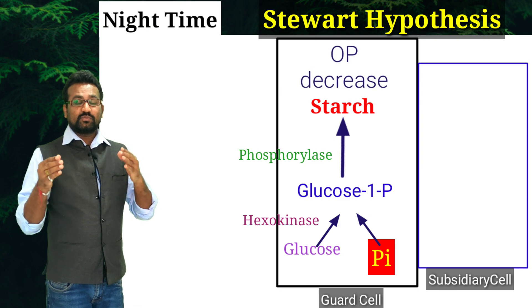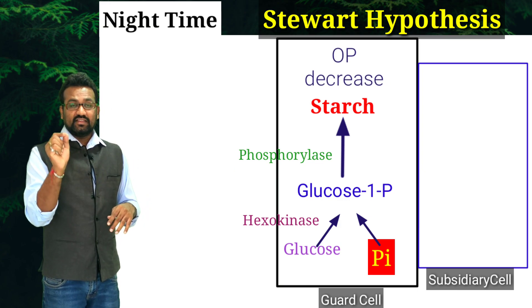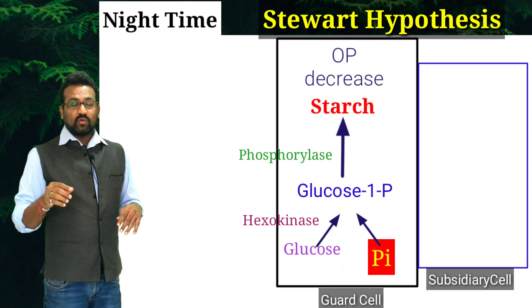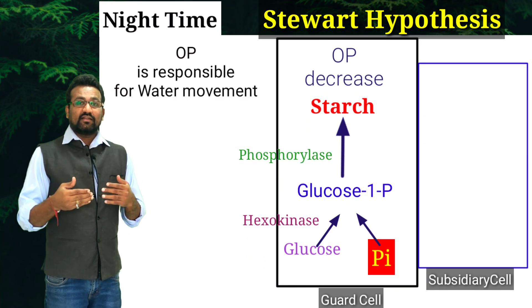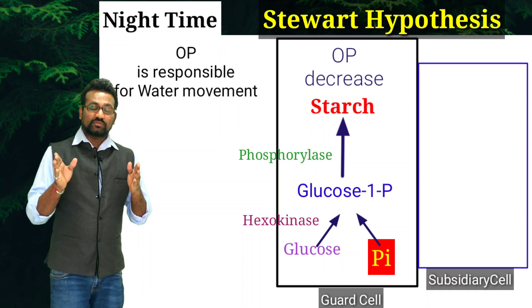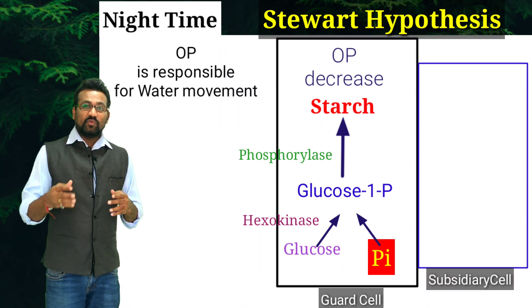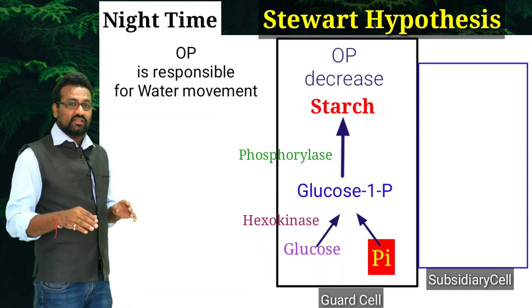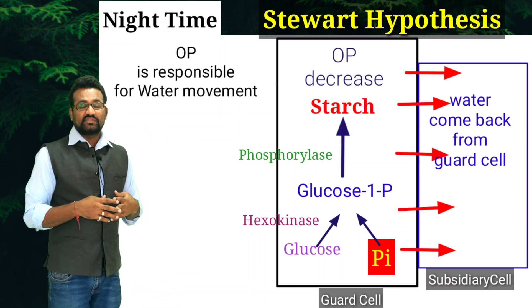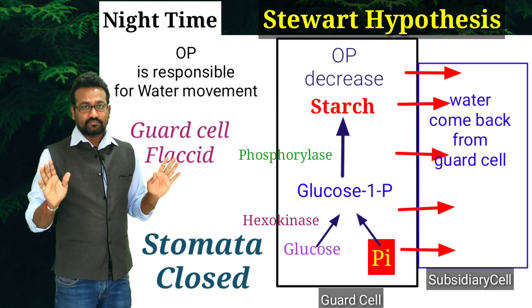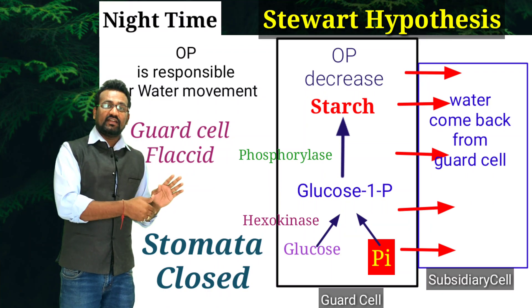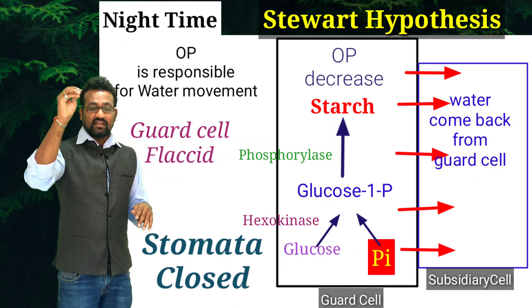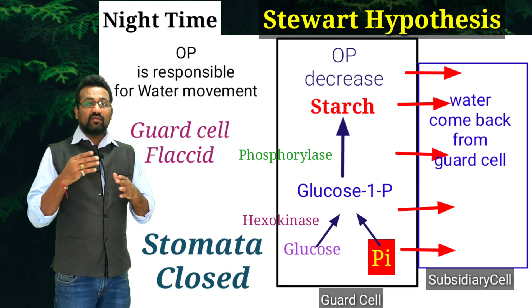Once the starch molecule is produced, the osmotic potential of the guard cell decreases. Osmotic potential is an essential point for opening and closing of stomata — it determines whether water enters or leaves the cell. If osmotic potential is high, that substance causes inward movement of water into the cell. Starch has less osmotic potential, so water leaves the guard cell into the subsidiary cell; the guard cell becomes flaccid and stomata close. During night time, carbon dioxide from respiration dissolves in the solvent, carbonic acid is produced, and this acid reduces the pH of the solution.